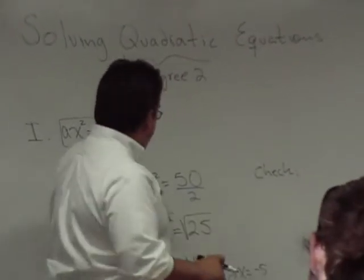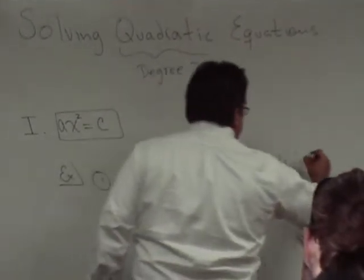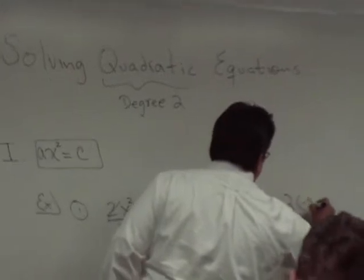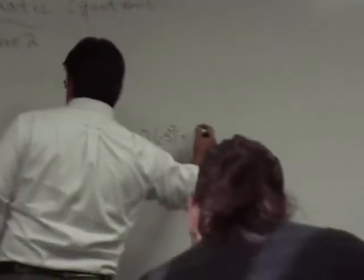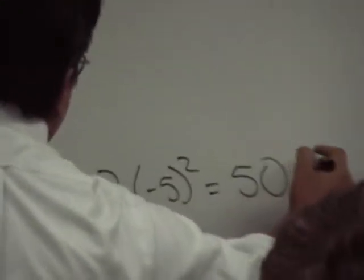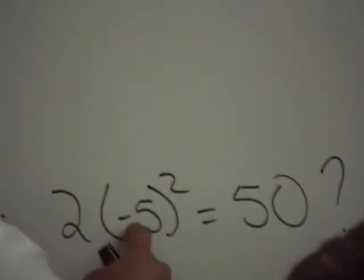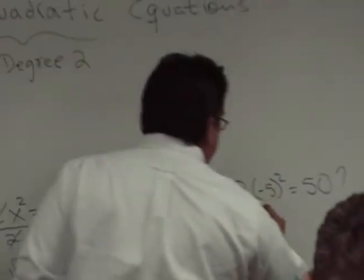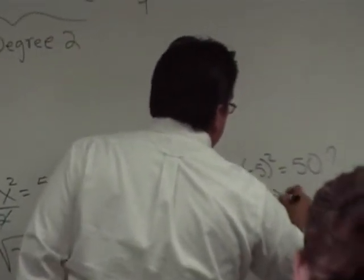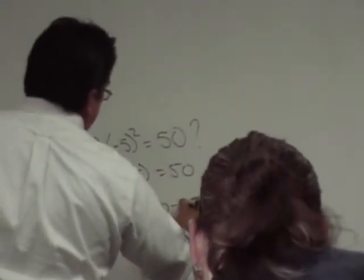When x equals negative 5, I would try to do it here and I would have this. 2 times negative 5 squared equals 50. I want to know if this is true. Is this true? Well, let's see. What's negative 5 squared? Negative 5 times negative 5 is 25. And then what is 2 times 25? 50. Notice how negative 5 worked.